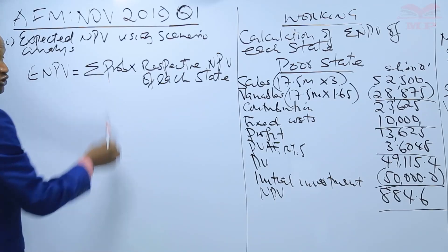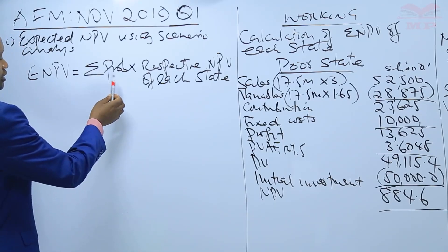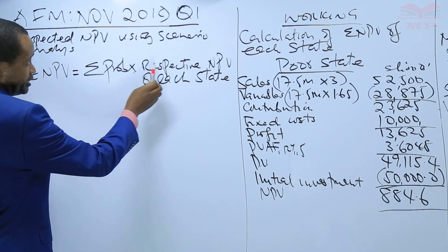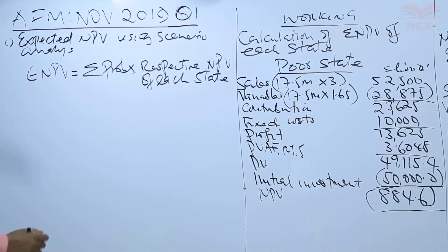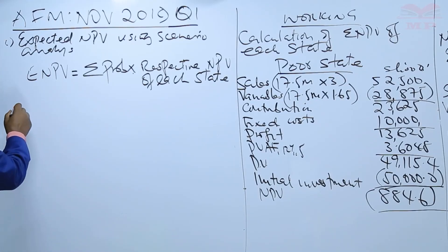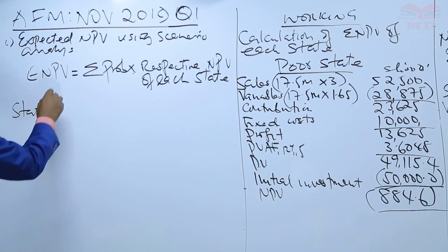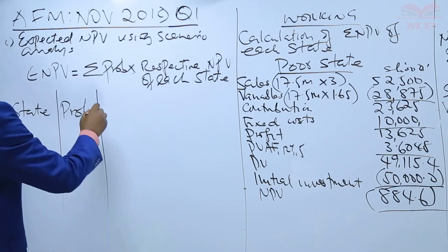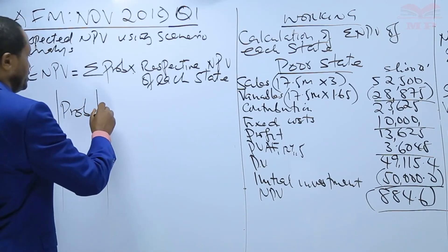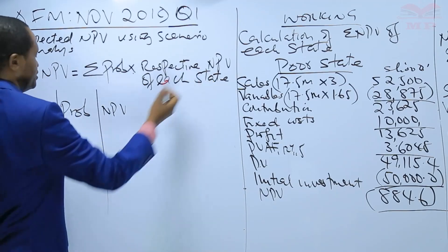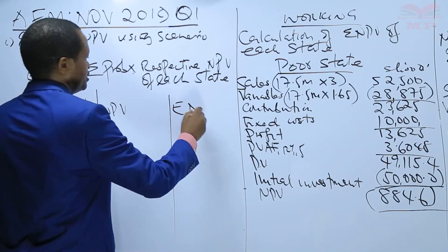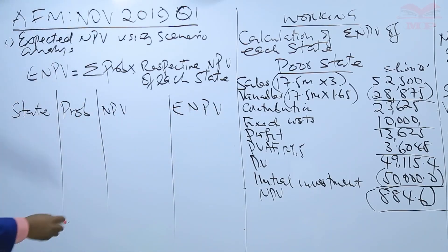The expected NPV equals the summation of the product of probability and the respective NPVs. We will calculate this using a table with columns for state, probability, NPV, and expected NPV. There are three states.